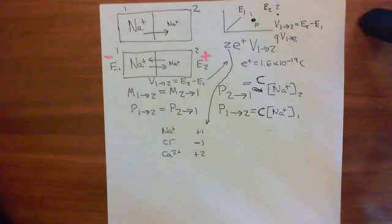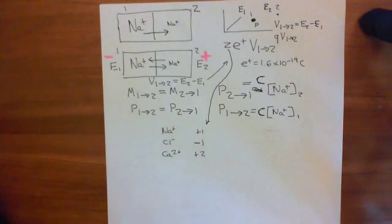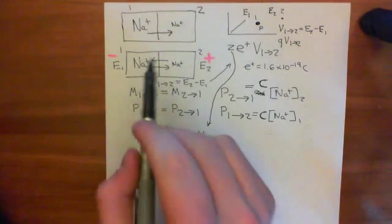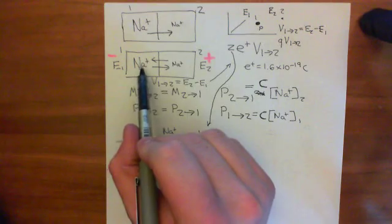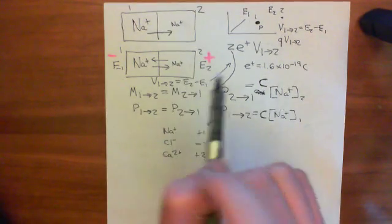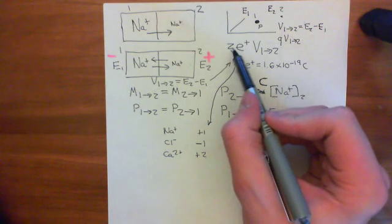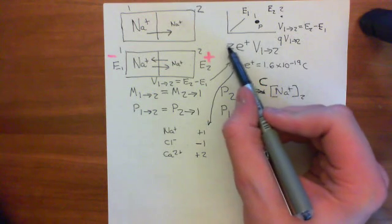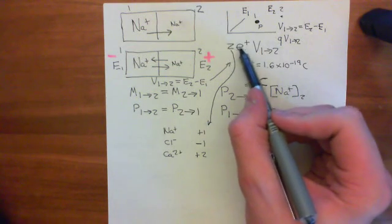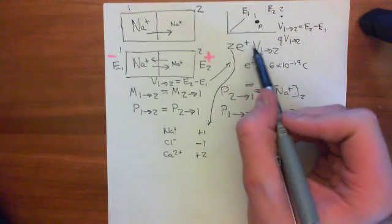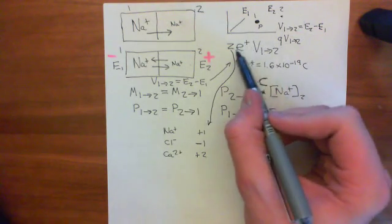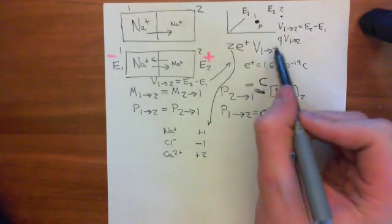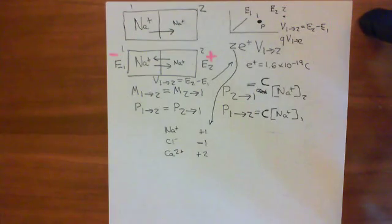Welcome to part 4 of our video on the Nernst equation. We've discussed how if you want to move a charged particle from compartment 1 to compartment 2, then the energy it's going to take is going to be the charge on that particle — the charge in terms of relative to the charge on the proton times the charge of the proton — which will overall give you the charge of the particle, and then times that by the voltage difference between compartment 1 and compartment 2.